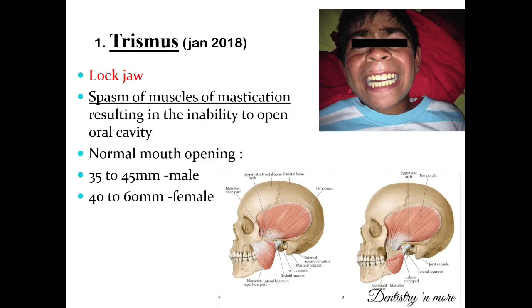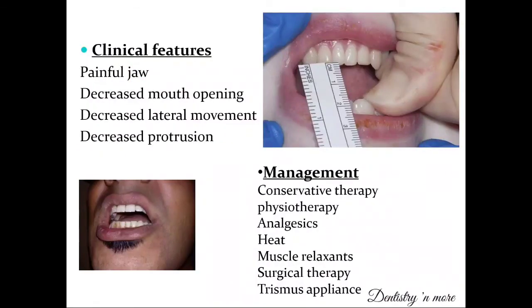Moving to the next chapter — temporomandibular joint disorders. One question frequently asked as a short note is trismus. Trismus means decreased mouth opening or a locked jaw, caused by spasm of the muscles of mastication, resulting in the patient's inability to open their oral cavity. The normal mouth opening range is 35 to 45 mm for males and 40 to 60 mm for females. Clinical presentation includes painful jaw, decreased mouth opening, decreased lateral movement, and decreased protrusion of the mandible.